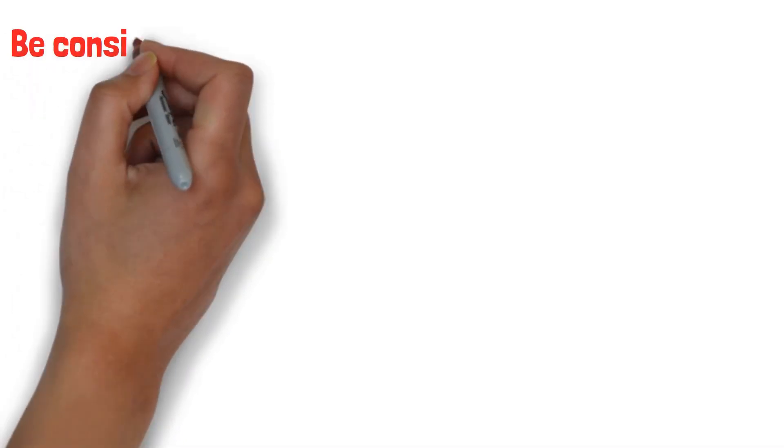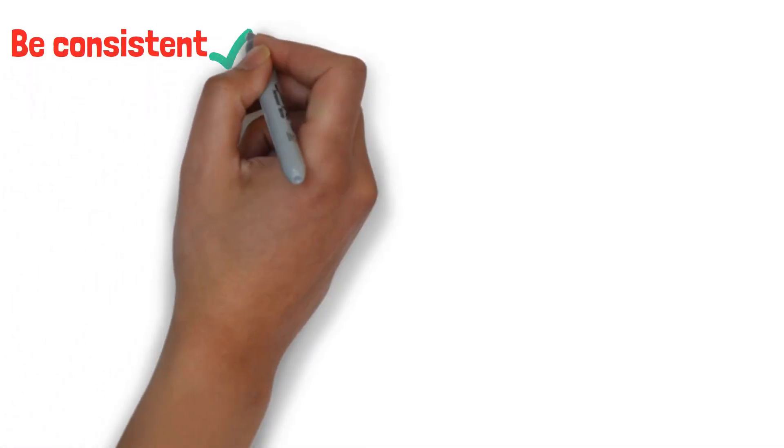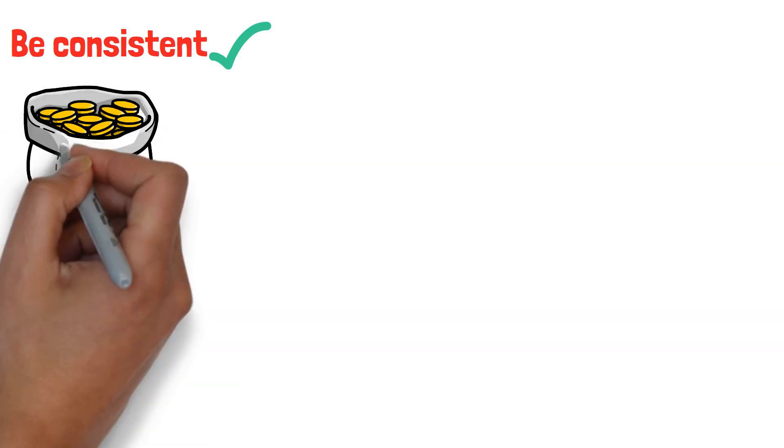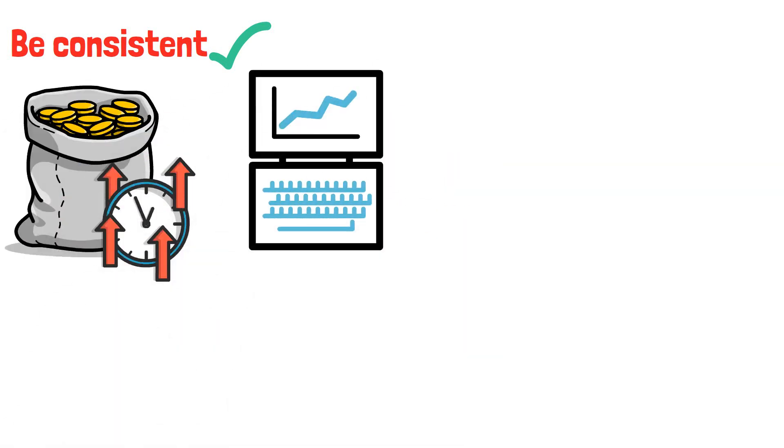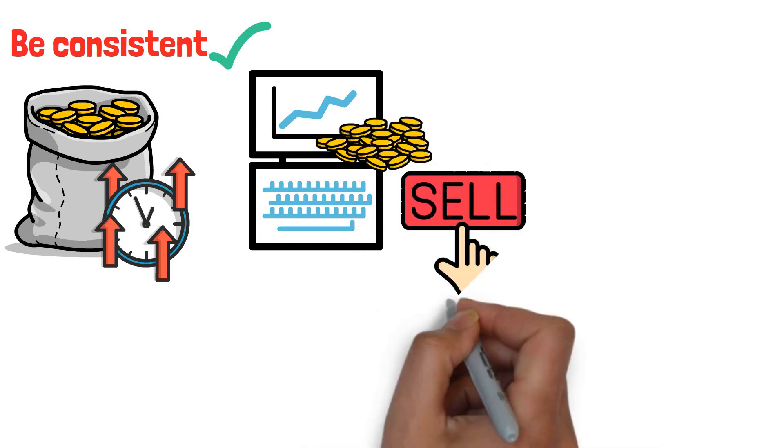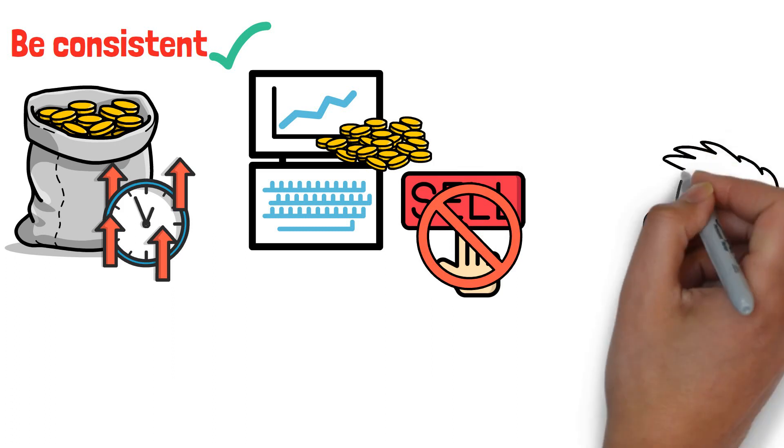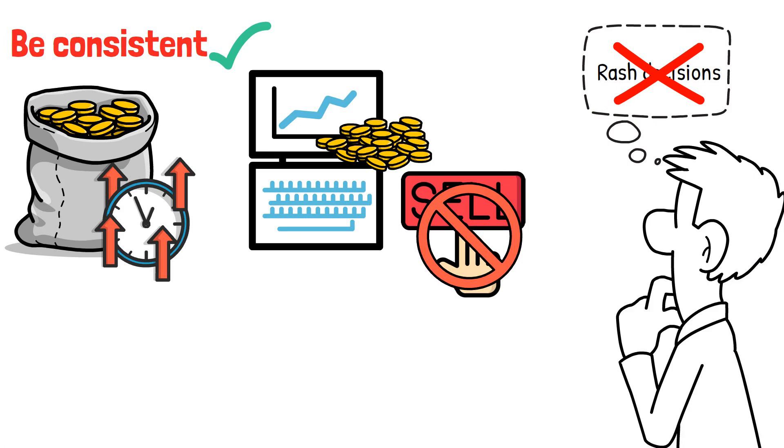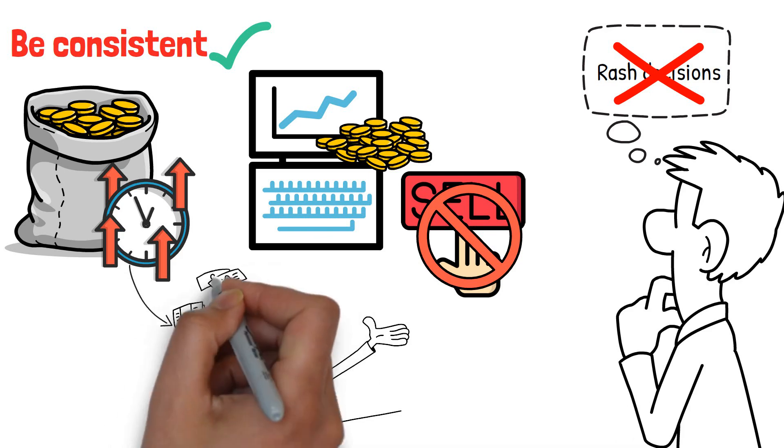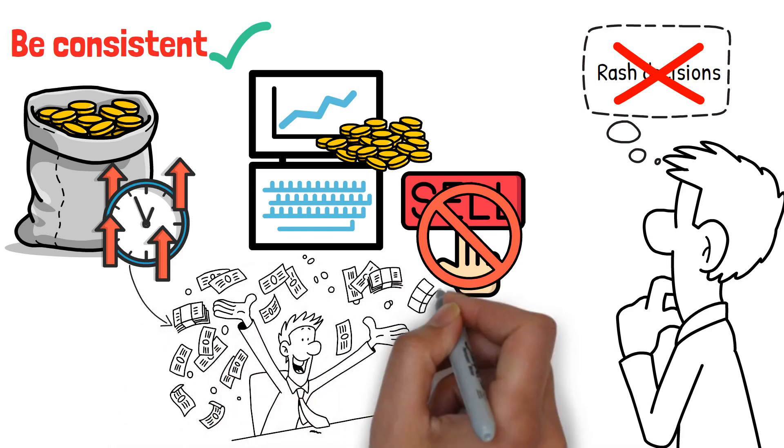The second step is to be consistent. You must be consistent for compound interest to work for you. You give your money the time it needs to compound and grow by investing a set amount each month and resisting the urge to withdraw or sell your investments. This entails sticking to your investment strategy and refraining from making rash decisions based on short-term market fluctuations. Over time, the power of compounding will benefit your investments, and you will see the results of your consistent efforts in the form of long-term wealth accumulation.